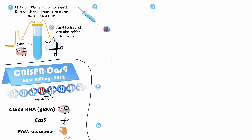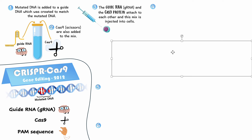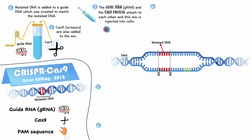Step two is adding the Cas9 scissors into the mix. We mix both the guide RNA and Cas9 together and inject them into the cell — especially into one of the first cells like the zygote. So now we have the mutated area in the cell. If we inject the Cas9 scissors and the guide RNA, which acts as the brain, into the cell — let me show you what's going to happen.